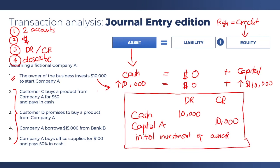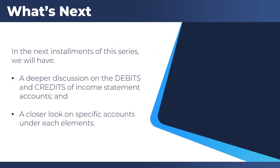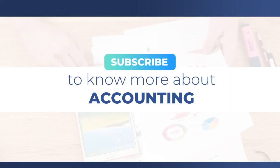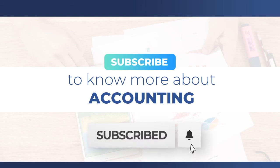When doing the rest of the assignment, please remember the steps you need to go through in order to create your own journal entries from the last four transactions. In the next installment of this series, we will have a deeper discussion on the debits and credits of the income statement accounts and a closer look at specific accounts under each element. As a recap: when you practice double entry bookkeeping, it means you need to practice transaction analysis and journal entry preparation. If you have any questions about the topic covered in this video, please feel free to comment below and I will do my best to respond. If you want to be updated on any future topics, make sure to hit that subscribe button and the notification bell. See you next time!